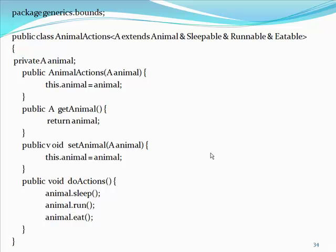For example, in our case, we want some animal to eat, sleep and run by implementing the eatable, sleepable and runnable interface. So, we have declared something like animal actions, Extend animal and sleepable and runnable and eatable. To sum up, the generic class declaration can be interpreted like this.